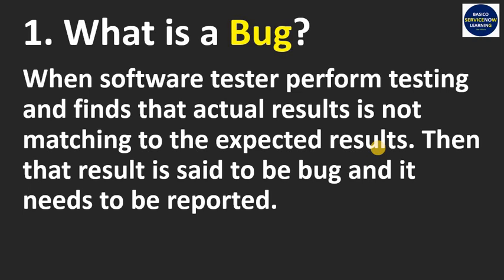Then what happens? That email is not received by person XYZ — instead it is received by person ABC, or the email is not delivered to anyone at all. That means it is not working as per the expected functionality or expected result, and it is said to be a bug.